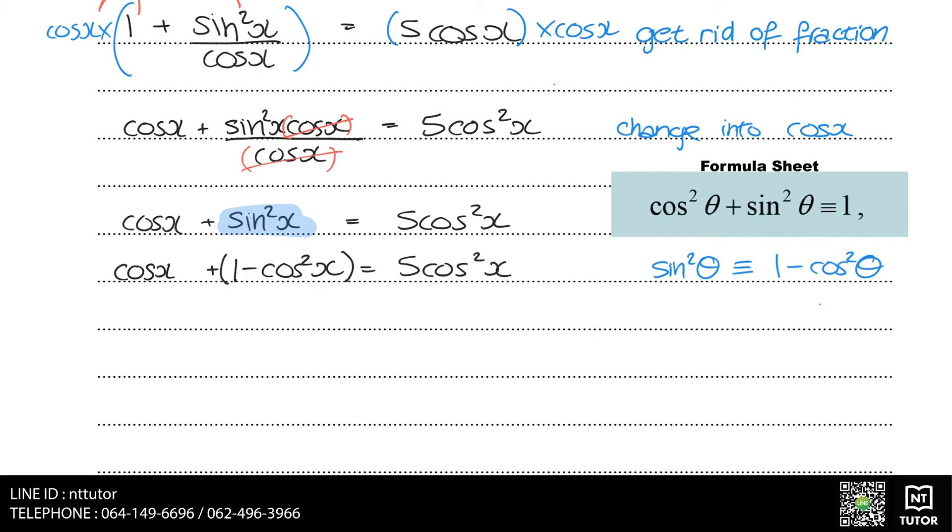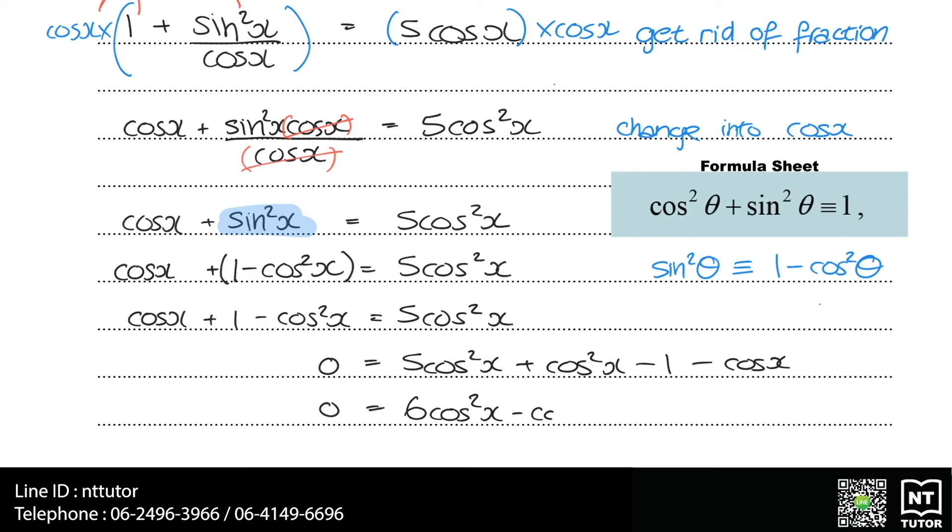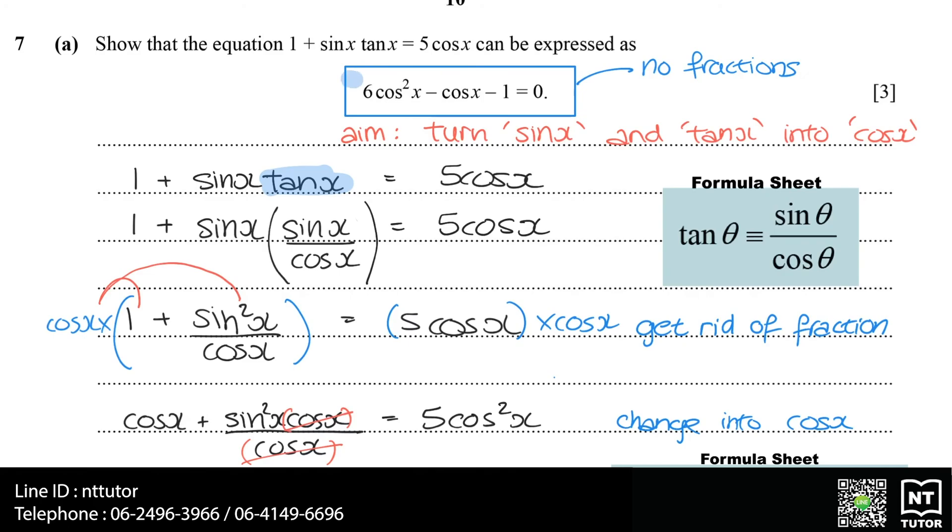Now our expression only has cos terms. So if we rearrange and simplify it, we should get 0 = 6 cos²x - cos x - 1, which is the expression that we want to turn it into.